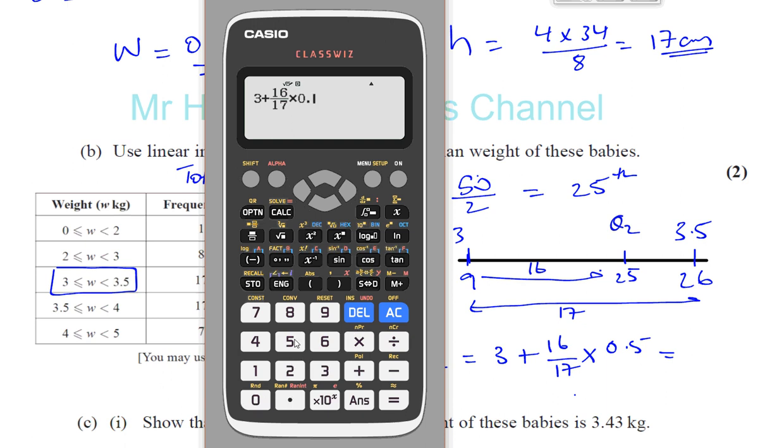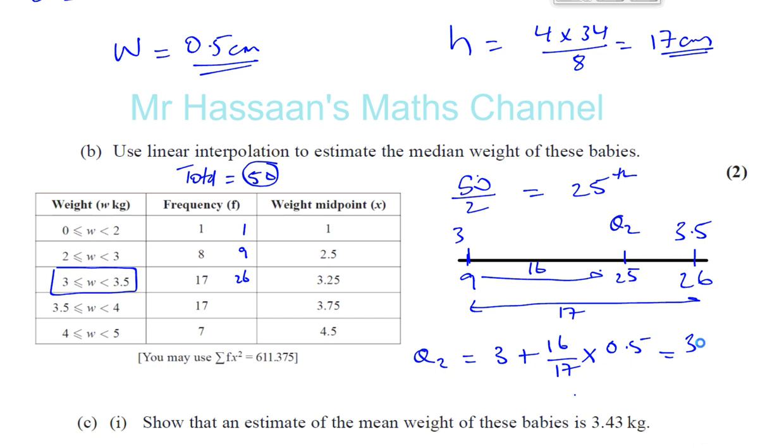So therefore, we're going to just do 3 plus 16 over 17 multiplied by 0.5. And that will give us 3.4705, which we round to 3 significant figures, gives us 3.47 kilograms. And there's our answer. That's Q2.